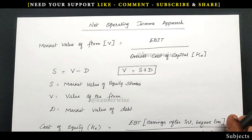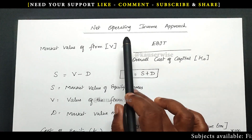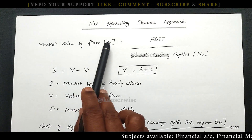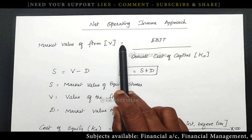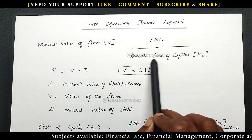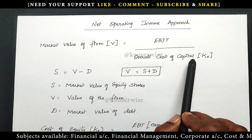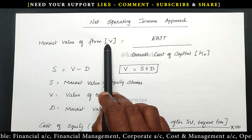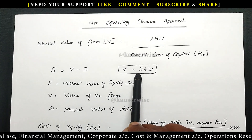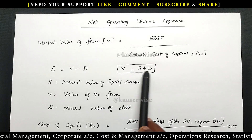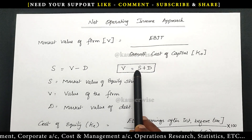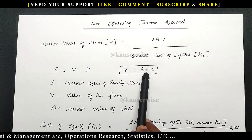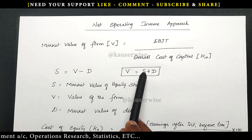Now let us see the formula. In the net operating income approach, we are going to find out two important components. The first one is the market value of the firm, that is V. The formula is: V is equal to EBIT divided by the overall cost of capital, that is KO. Both values will be given in the problem — simply substitute to find V. For reference, in the net income approach the formula is V is equal to S plus D, where S refers to market value of share and D refers to market value of debt.